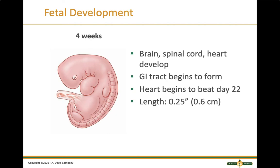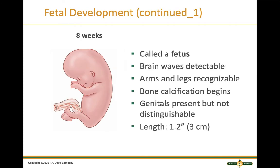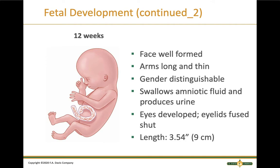During the fetal stage, around four weeks the brain, spinal cord, and heart develop, and the GI tract begins to form. The heart begins to beat around day 22. Around eight weeks — now called a fetus — brain waves are detectable, the arms and legs are recognizable, bone calcification begins, and the genitals are present. Around 12 weeks, the face is well formed, the arms become longer and thinner, gender can be determined, and the fetus swallows amniotic fluid. The kidneys produce urine — which it drinks again, but it's sterile because all wastes go to the mother.